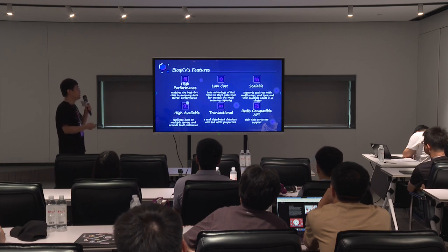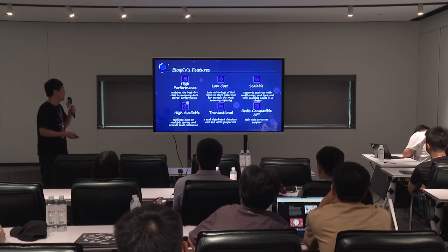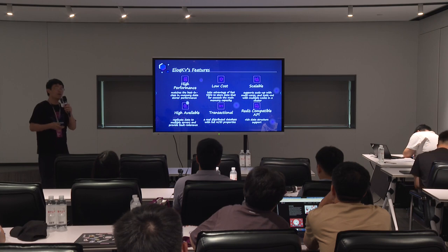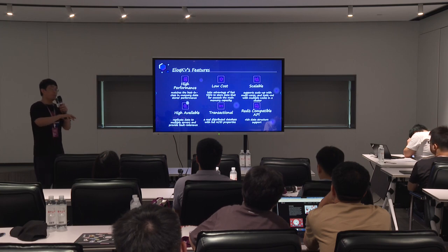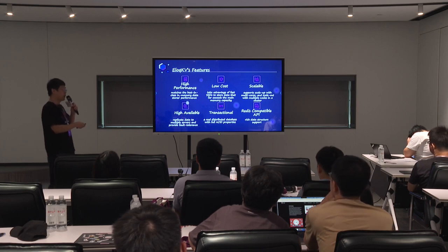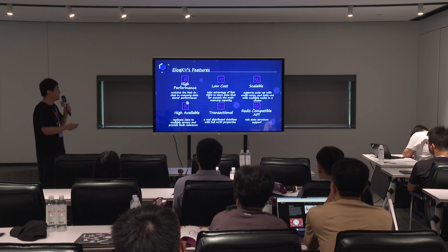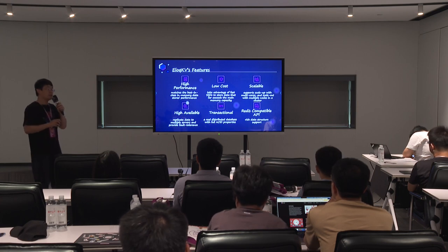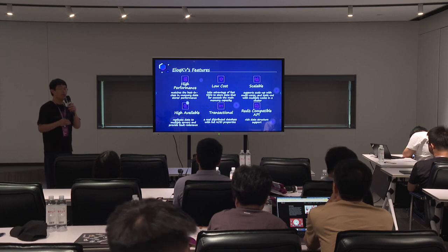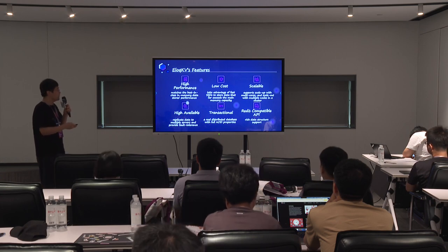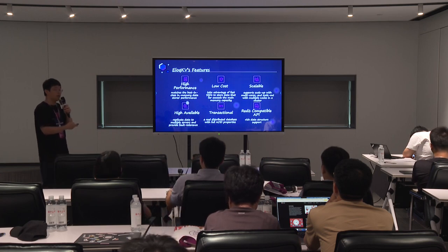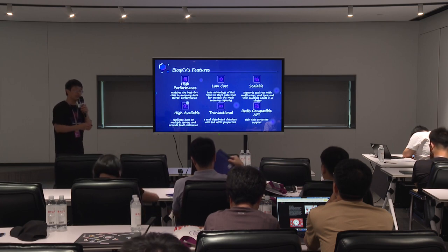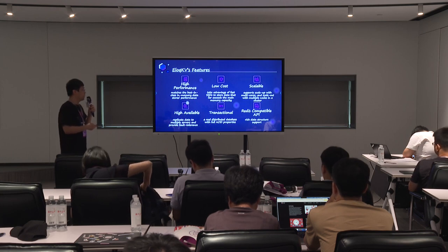The next feature is low cost: we can store hot data in memory and use SSD to serve cold data. It is also scalable, supporting both scale-up and scale-out. HA is powered by Cassandra, which is a verified database supporting cross-AZ replication, so LLKV also has very good high availability. The next one is transactional — it is not just a key-value database, it can also do transactions. And the last feature is a Redis-compatible API. Redis has rich data structures loved by many developers.